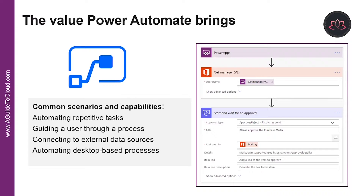Let's first discuss what the value of Power Automate is. Do you find yourself regularly downloading email attachments and then uploading the file to the database? Power Automate can help. Does the process of getting a new purchase order approved involve taking a form from desk to desk to get sign-off? Or do you have to log into a website every morning, find a daily number, and then save those into another system? Power Automate can help with all of that.